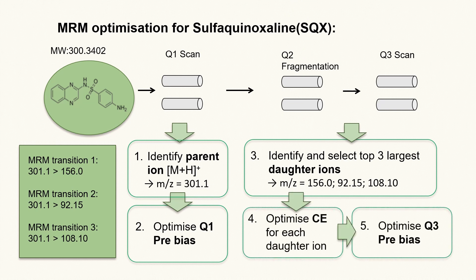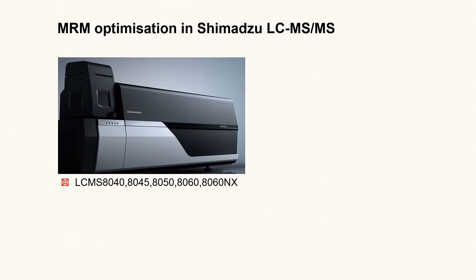Lastly, collision energy, Q1 pre-bias, and Q3 pre-bias were optimized for each transition to obtain the best sensitivity.